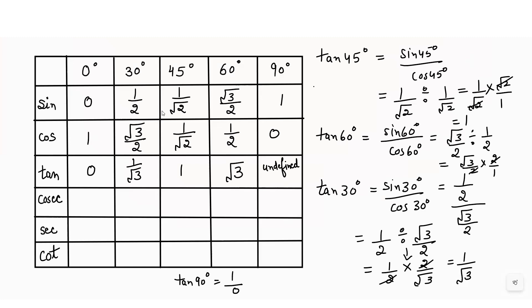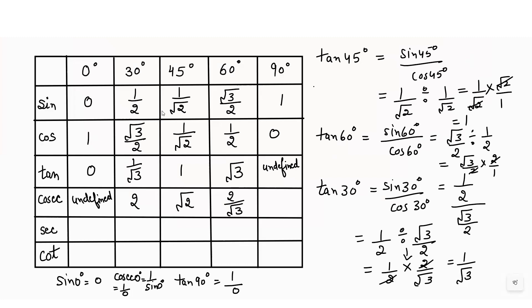Cosecant theta is the reciprocal of sine theta. So cosec 0° = 1/sin 0° = 1/0, which is undefined. For the rest, the reciprocal of 1/2 is 2, the reciprocal of 1/√2 is √2, the reciprocal of √3/2 is 2/√3, and the reciprocal of 1 is 1.